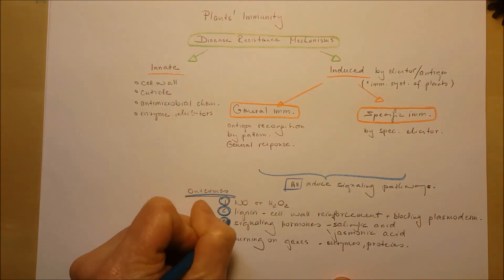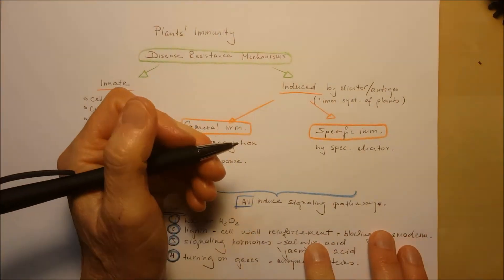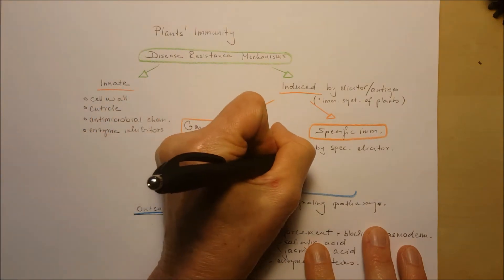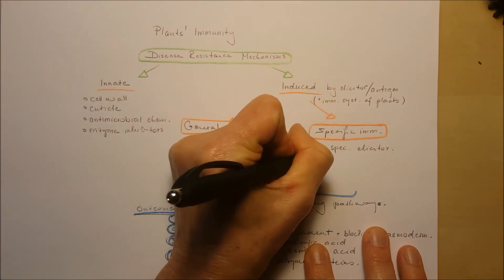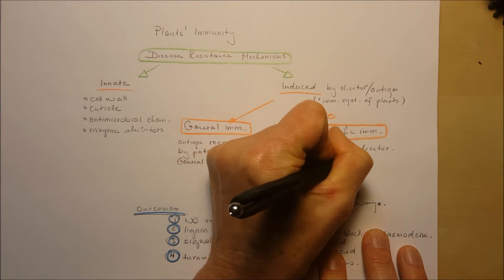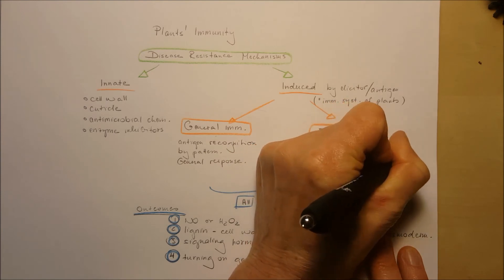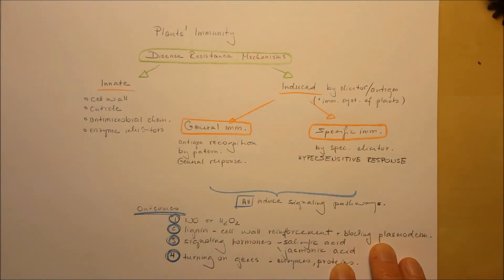These are the four outcomes that deal with cell signaling. There's also a specific response for specific immunity, and this response is the hypersensitive response. This happens only when the plant recognizes a specific elicitor.